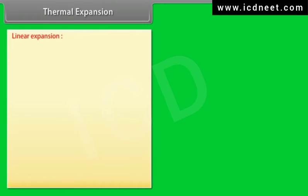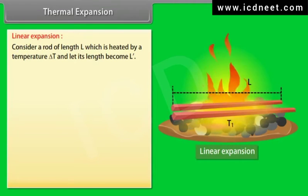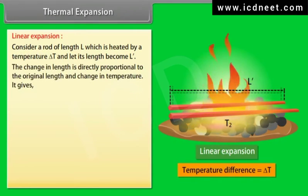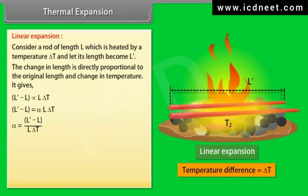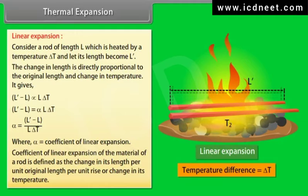Linear expansion: Consider a rod of length L heated by a temperature delta T and let its length become L'. The change in length is directly proportional to the original length and change in temperature. It gives L' minus L is equal to alpha L delta T. The value of alpha equals (L' minus L) upon L delta T, where alpha is the coefficient of linear expansion, defined as the change in length per unit original length per unit rise in temperature.